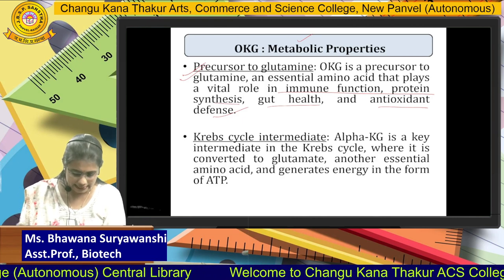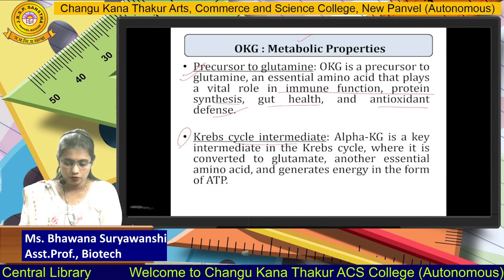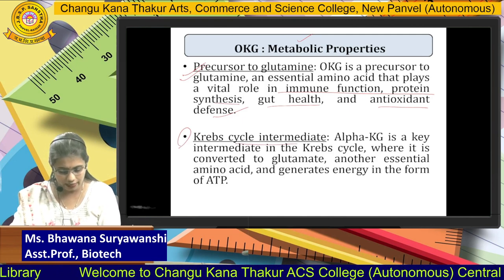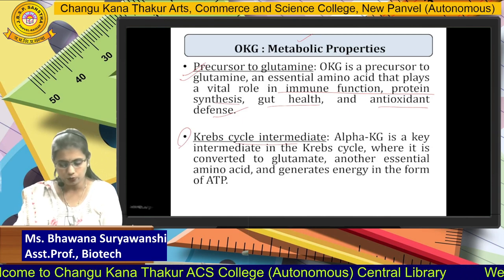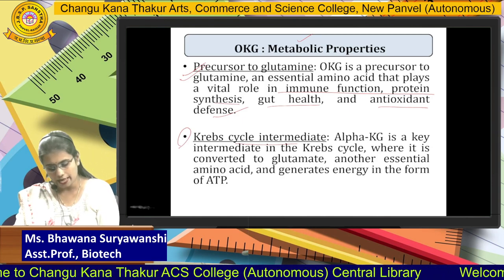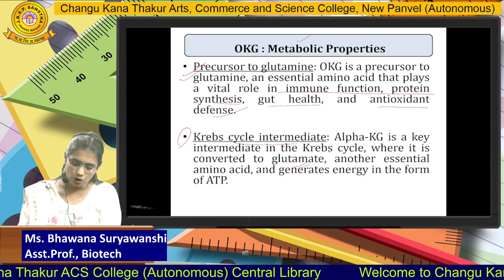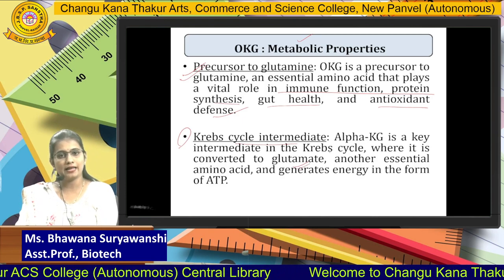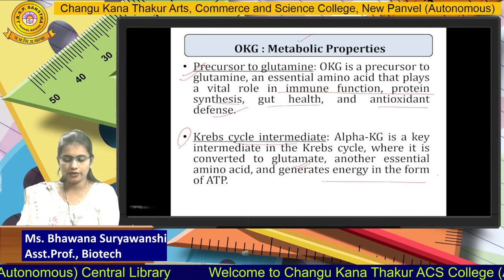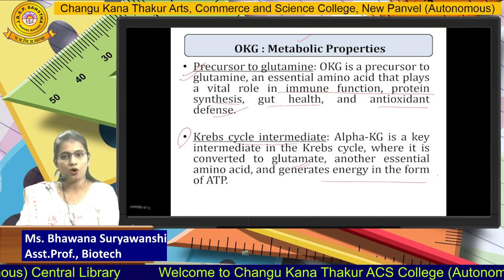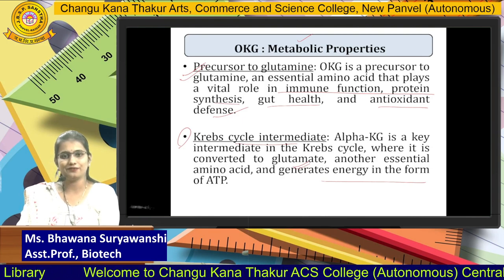The second metabolic property is that OKG is an important Krebs cycle intermediate. Alpha-ketoglutarate is a key intermediate in the Krebs cycle where it is converted to glutamate and other essential amino acids, and it finally generates energy in the form of ATP, which is the energy currency of the cell.